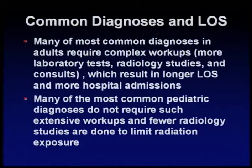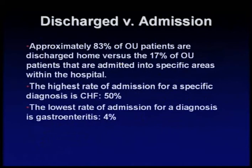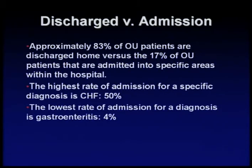Many of the most common diagnoses in adults require complex workups, lab tests, radiology studies, and consults, which results in longer length of stay and more hospital admissions. Many of the most common pediatric diagnoses do not require such extensive workups and fewer radiology studies are done to limit radiation exposure. Approximately 83 percent of observation unit patients are discharged home versus the 17 percent that are admitted into specific areas within the hospital. The highest rate of admission for a specific diagnosis is congestive heart failure with 50 percent of patients. The lowest rate of admission is gastroenteritis at 4 percent.